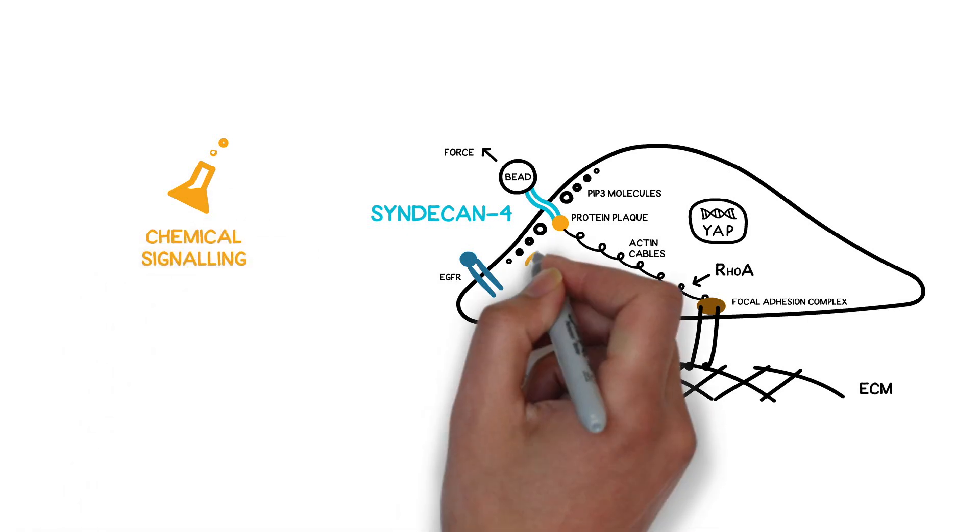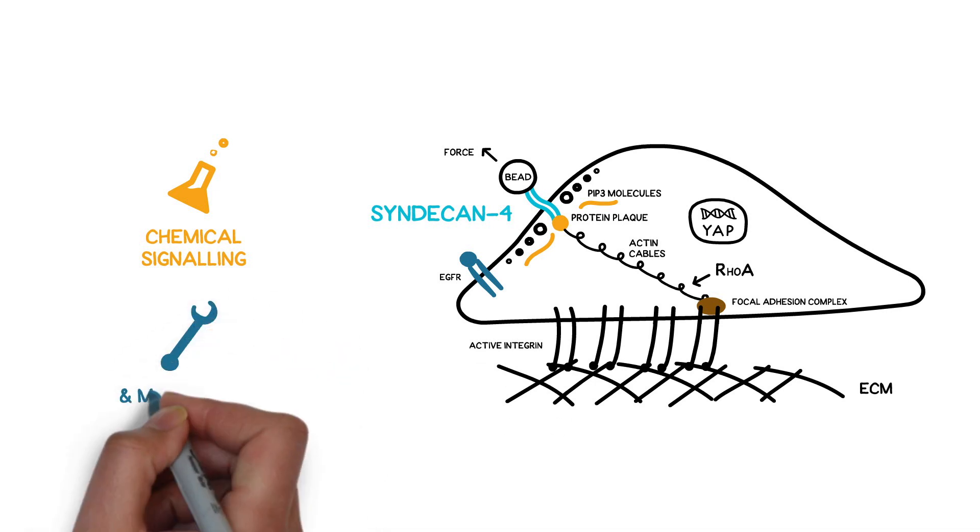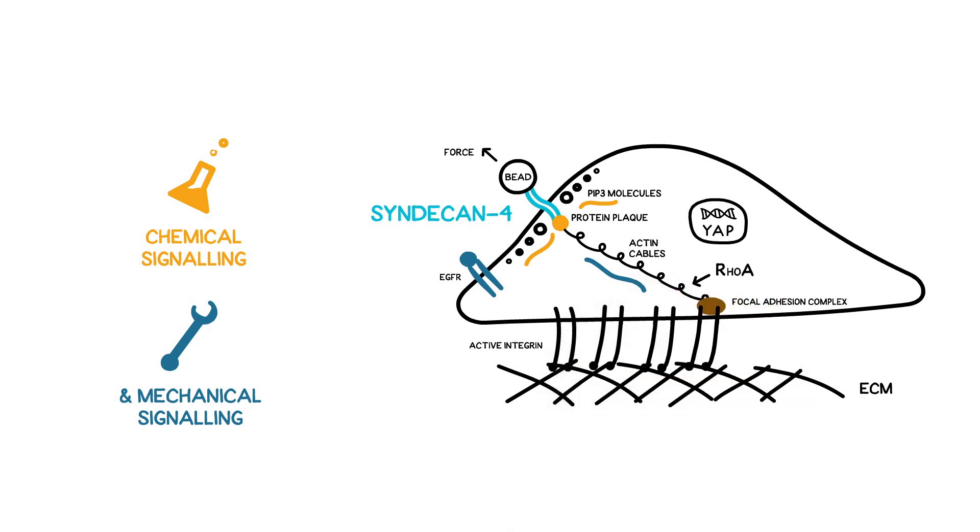activation of EGFR receptor, and diffusion of lipid second messengers such as PIP3, as well as mechanical propagation of the signal through the tensile cytoskeleton via the syndecan-4-alpha-actinin actin linkage.